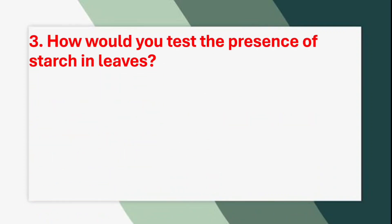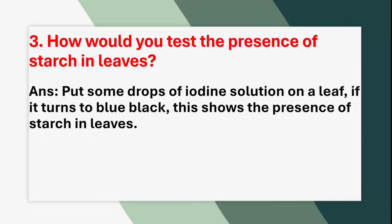Third question: How would you test the presence of starch in leaves? Answer: Put some drops of iodine solution on a leaf. If it turns blue-black, this shows the presence of starch in the leaves.